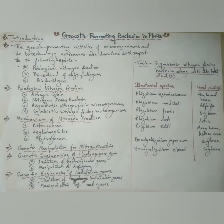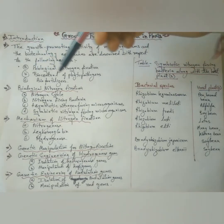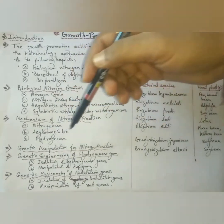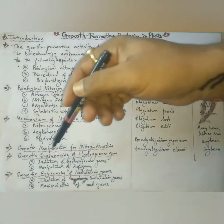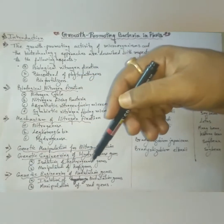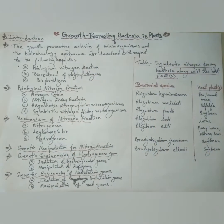We will discuss growth-promoting bacteria in plants. In this we will discuss introductions, biological nitrogen fixations, mechanisms of nitrogen fixations, genetic manipulations for nitrogen fixations, genetic engineering of hydrogenase genes, genetic engineering of nodulations genes and symbiotic nitrogen fixation bacteria along with the host plants tables.